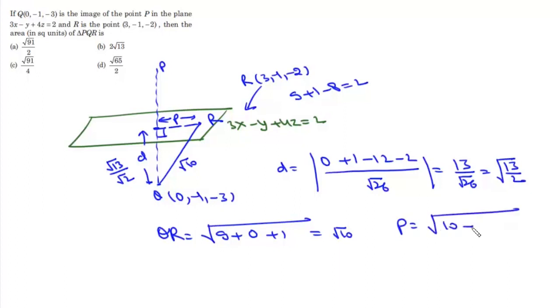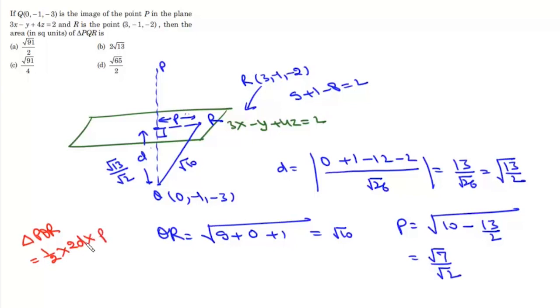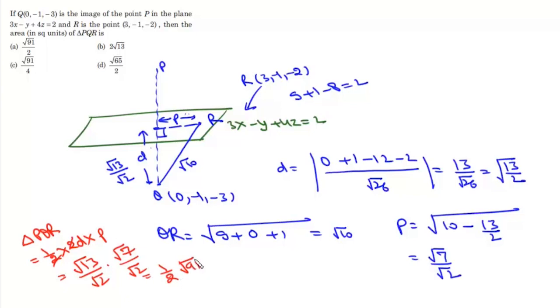Distance QR: sqrt(9 + 0 + 1) = √10. The height of triangle PQR from P to QR is found using the Pythagorean theorem: √(10 - 13/2) = √(7/2). Area of triangle PQR = (1/2) * base * height = (1/2) * 2d * p = (1/2) * √(13/2) * √(7/2) * 2 = (1/2)√91 — option a.